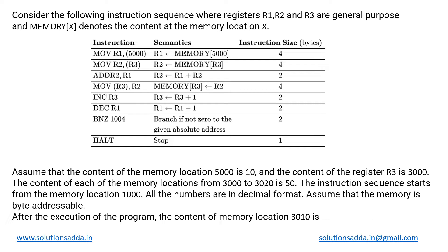A small question based on instruction sets. We have been given the following instruction sequence where r1, r2, and r3 are general purpose registers, and memory[x] denotes the content at memory location x. The instruction sequence is given in tabular format, and at the end we need to determine the output. Assuming that the content of memory location 5000 is 10.